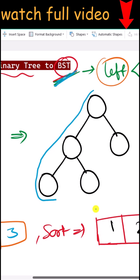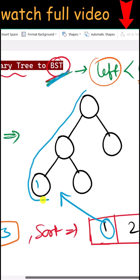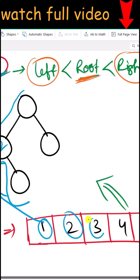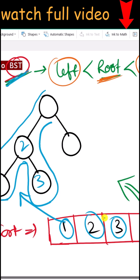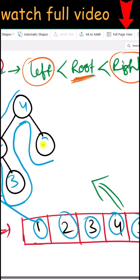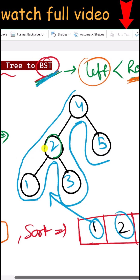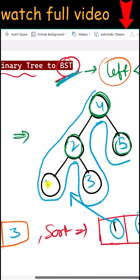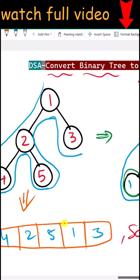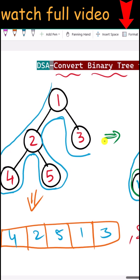Whenever we reach a node during the in-order traversal, we insert the next sorted value into that node. So two is inserted first, then three, then four, and finally five. Now the left child is smaller than the root and the right child is larger than the root at every node, confirming that this is a valid binary search tree.